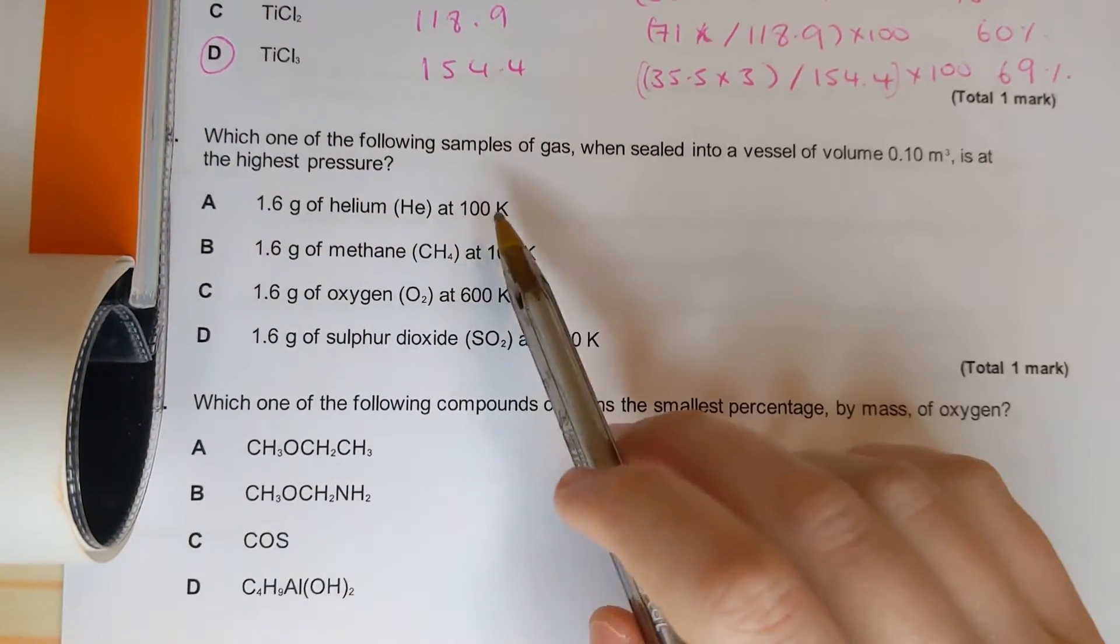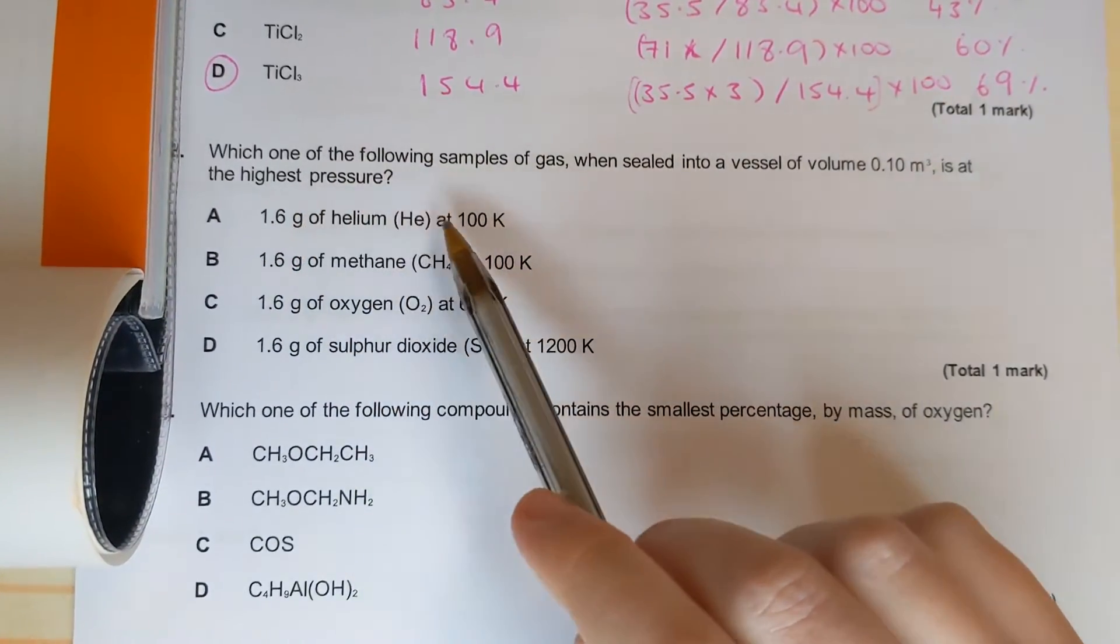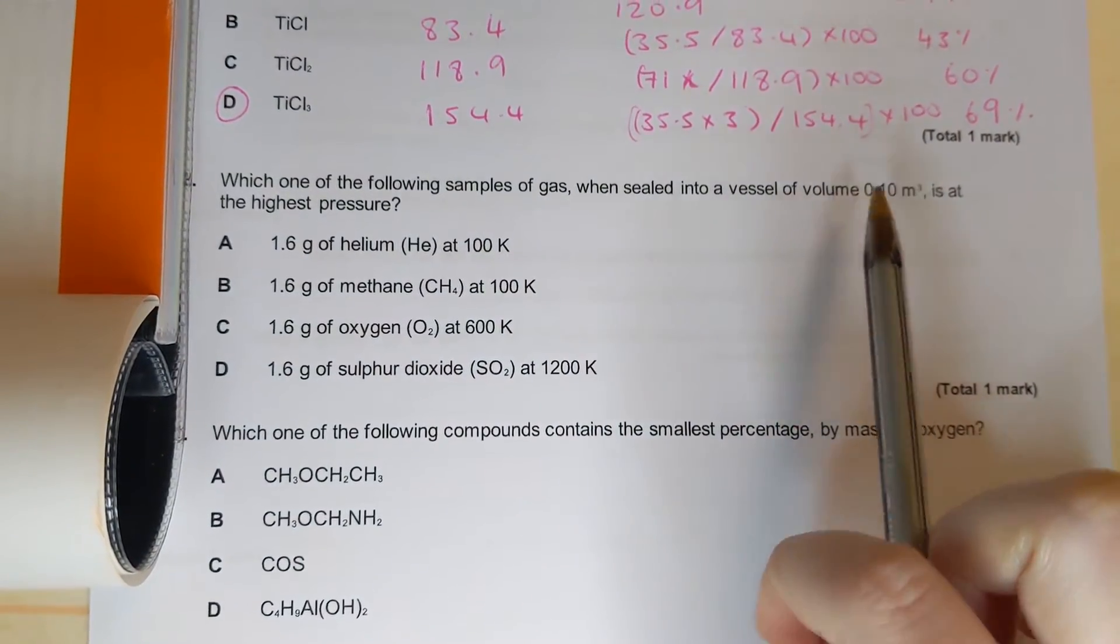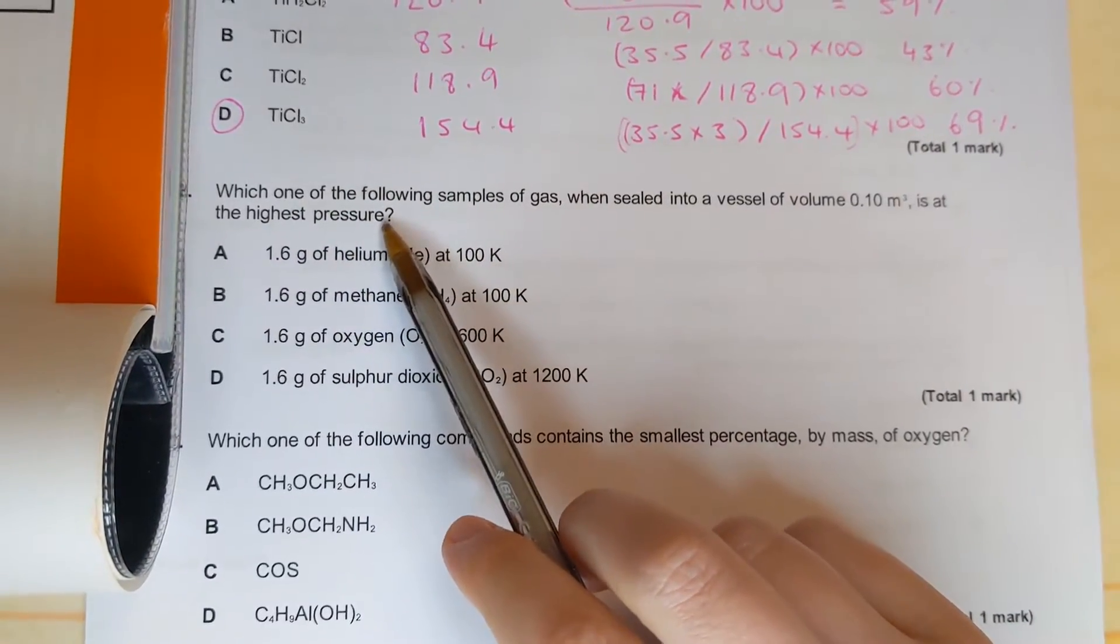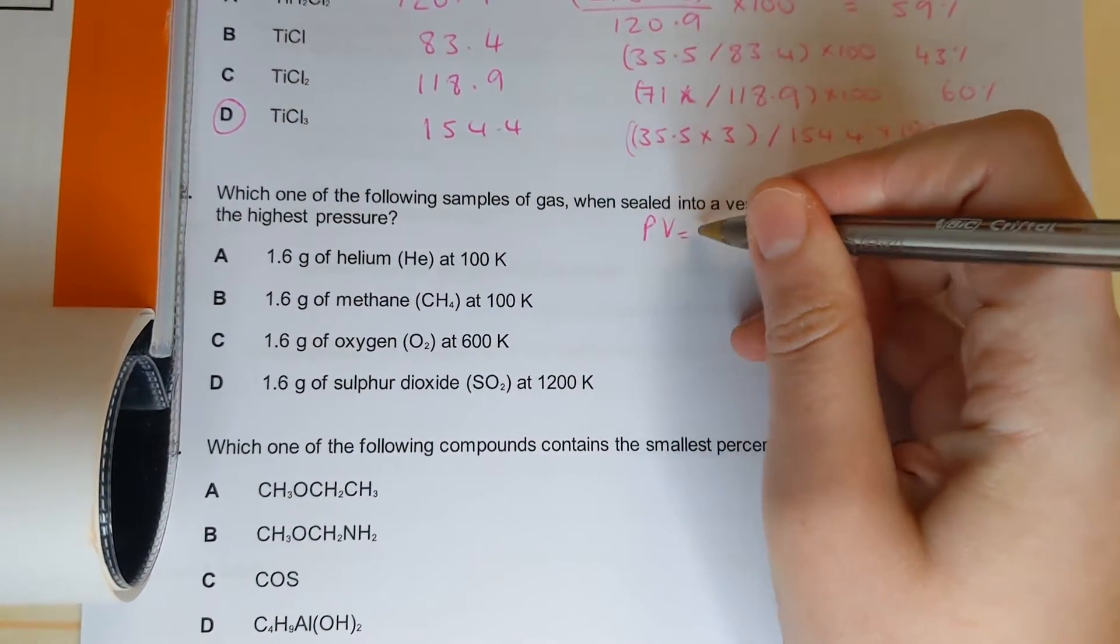This next question is the ideal gas equation because we've got an amount of gas that's not at room temperature and pressure and we're given a volume as well and it's asking us to calculate pressure. So we're going to use the ideal gas equation and rearrange for pressure.